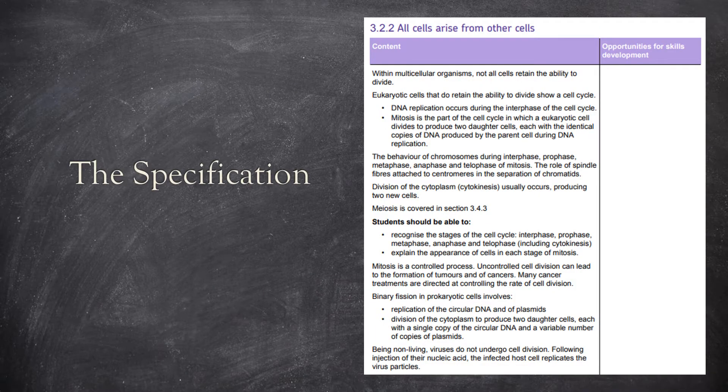Let's look at the specification. It starts off with the cell cycle, as well as mitosis and cytokinesis. As it says here, meiosis, which is the other type of nuclear division, is covered later on in the specification. Then we'll talk about cancer, as well as binary fission, which is the type of cell division in prokaryotes.